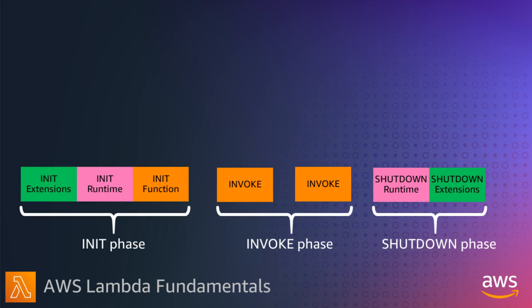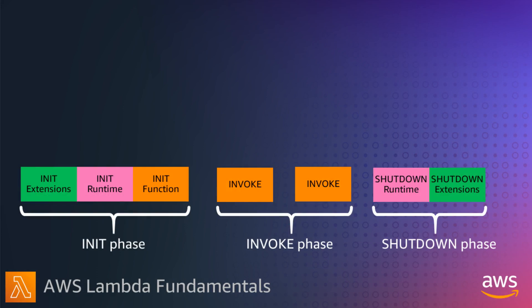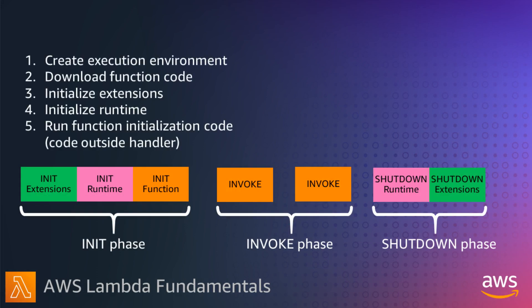This is what the Lambda execution environment lifecycle looks like. There are three phases: init, invoke, and an additional shutdown phase. When a request comes in for your first invocation of your function,